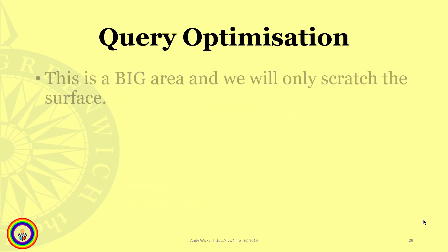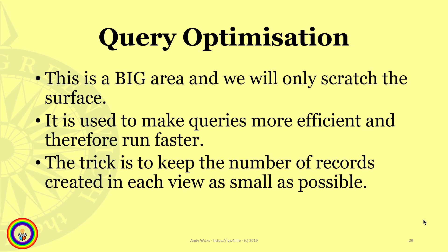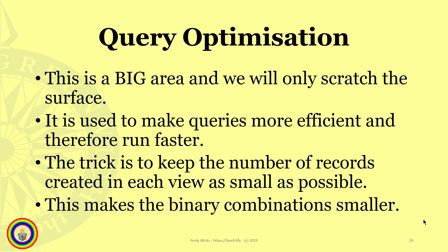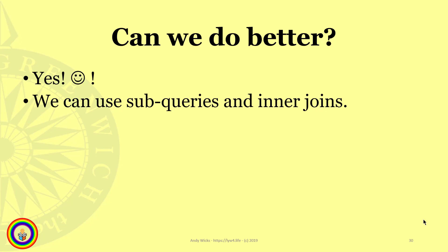So, query optimisation. This is a big area and we're only going to scratch the surface here — you could probably do master's degrees in this area. The trick is to keep the number of records created in each view as small as possible. If you're not sure what a view is, please see the previous video on views and queries. This makes the binary combinations much smaller. Can we do better than the 3 million plus? Yes we can. We can use subqueries and inner joins, and I'm going to explain both separately, and then return to subqueries because they also have another advantage.